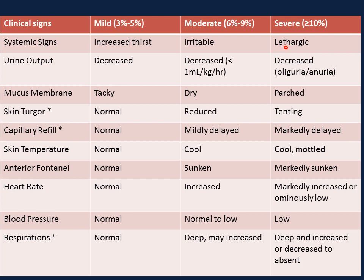In severe dehydration, the child is lethargic with decreased or absent urine output. The mucous membrane is extremely dry or parched. Skin turgor is tenting, and in cases of hypernatremic dehydration, the skin will be doughy. Capillary fill is markedly delayed, more than 2 seconds. Skin temperature is cool, mottled, or clammy, especially in shock. The anterior fontanel is markedly sunken. Heart rate is markedly increased, blood pressure is low — a late presentation requiring immediate volume expanders and boluses. Respirations are deep, increased, or even decreased or absent.